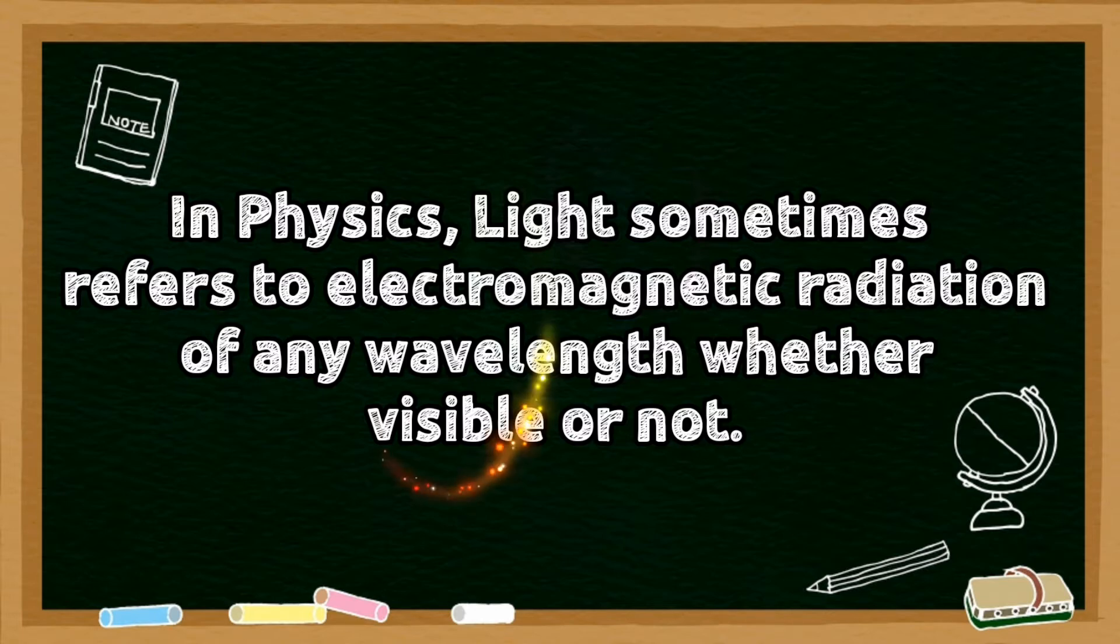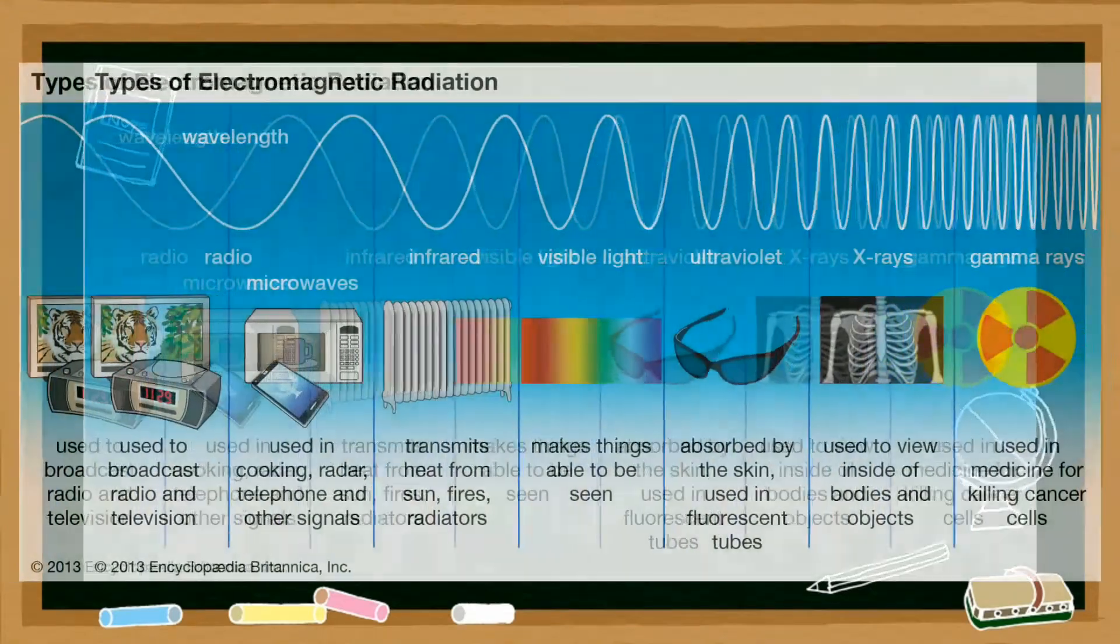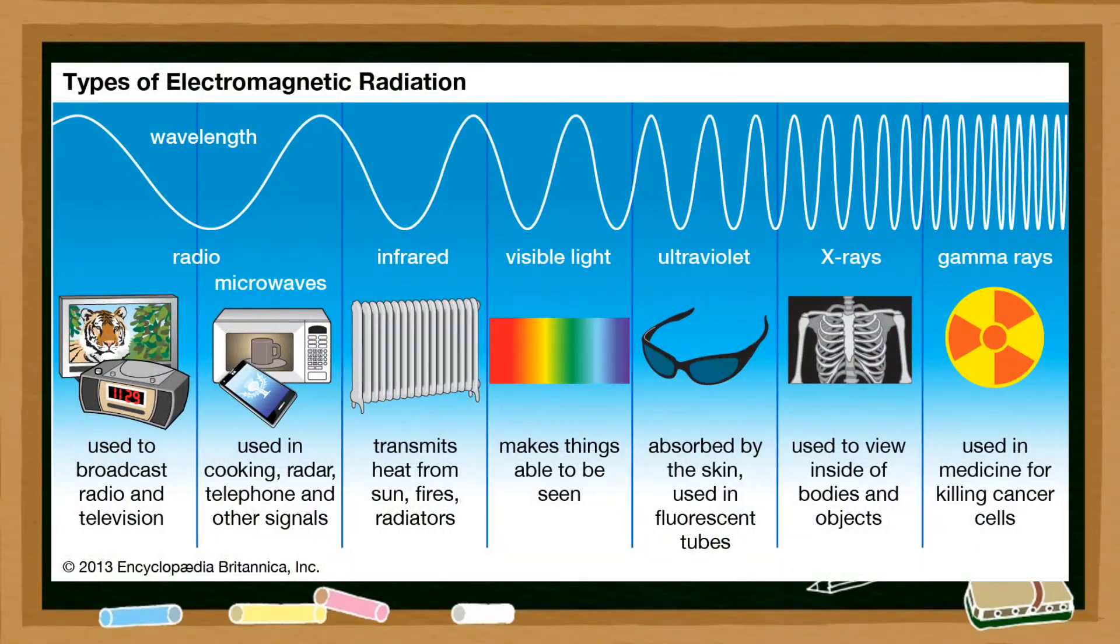In this sense, radio and television waves, microwaves, infrared, ultraviolet rays, x-rays, and gamma rays are also lights.